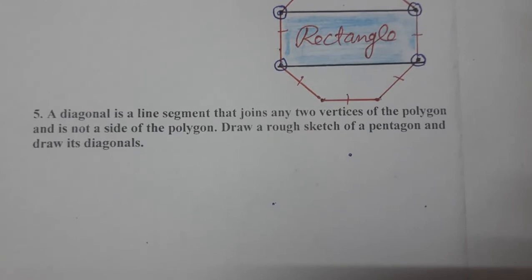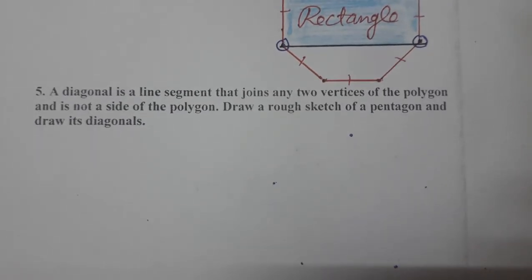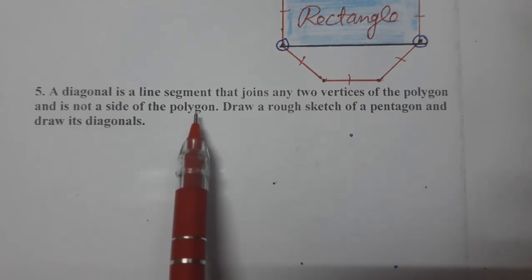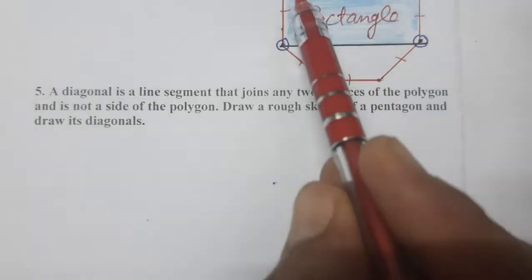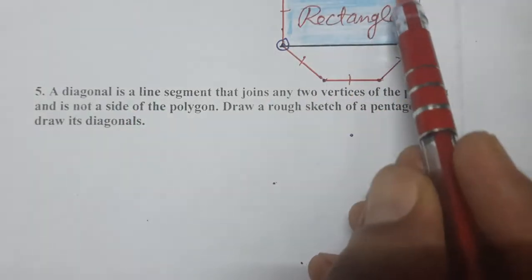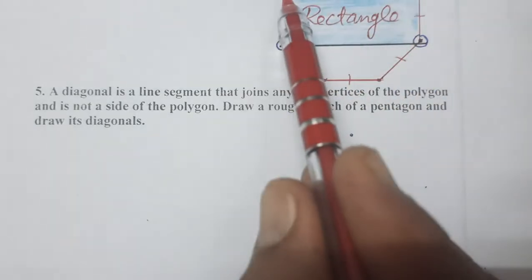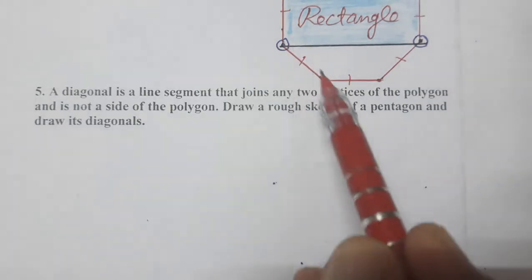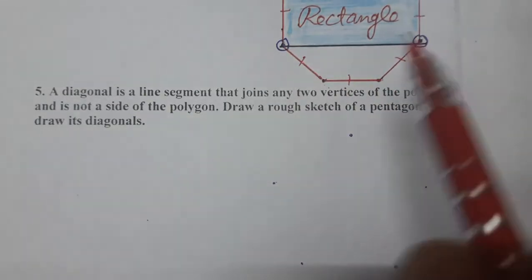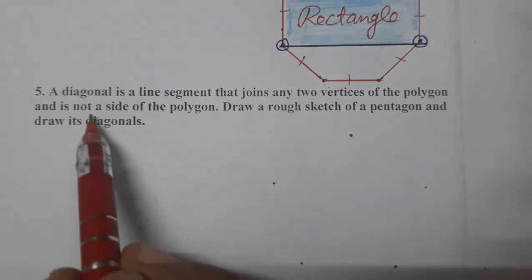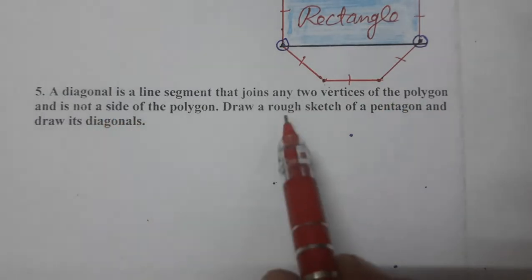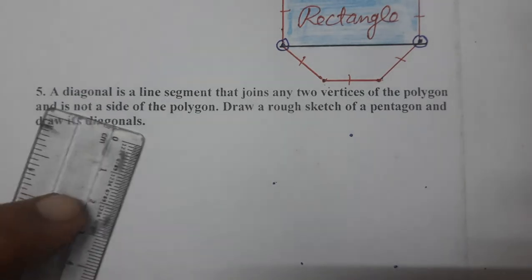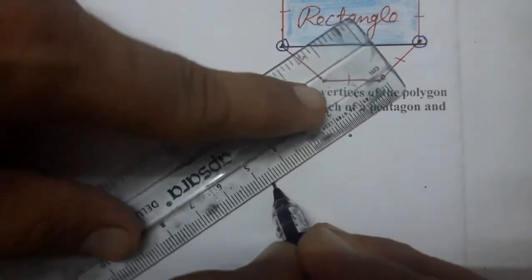Now comes question number 5. A diagonal is a line segment that joins any two vertices of a polygon and is not a side of the polygon. Now draw a rough sketch of a pentagon. A pentagon means a polygon with five sides.